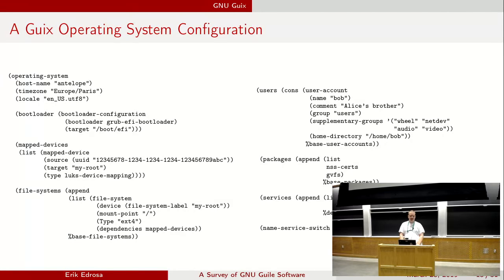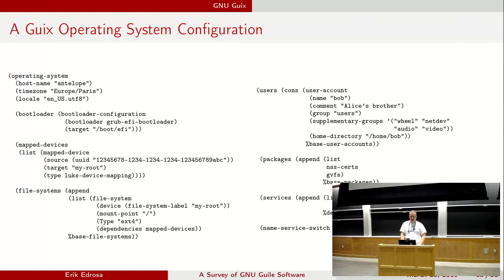Here's an example of an actual Guix operating system configuration. It uses a similar DSL approach for declaring the operating system, and you can also use normal Scheme code to interact with it — as you can see, there's list, append, cons — it's all Scheme. With this operating system configuration, you can then use Guix to actually build and install this onto your laptop or desktop, as well as create virtual machines based on this configuration.